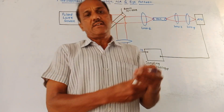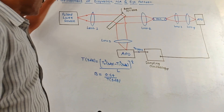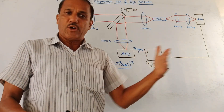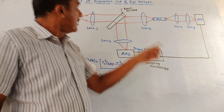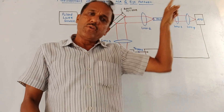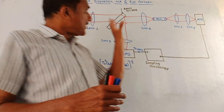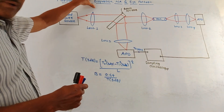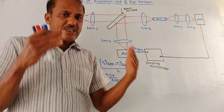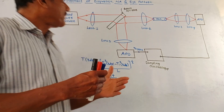Hello and welcome back to this channel. Dear students, this topic is measurement of dispersion — rather intermodal dispersion of the optical cable — then measurement of NA, that is numerical aperture, and we will also discuss the eye pattern. First part is measurement of dispersion. We'll be discussing the technique to measure intermodal dispersion in the case of a fiber optic cable.